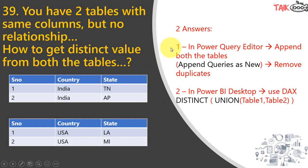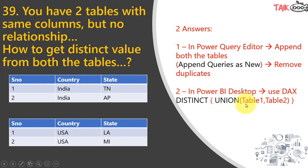There are two answers. First, in the Power Query Editor, you can go to Append Query as New and then remove duplicates. The other way is in Power BI Desktop using the DAX function: you can UNION the two tables — UNION(Table1, Table2) — and then wrap it with DISTINCT to get only distinct values from both tables.